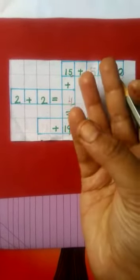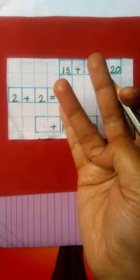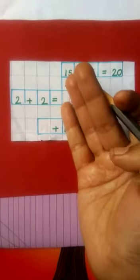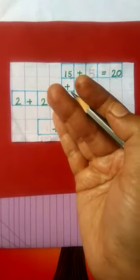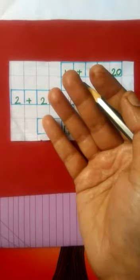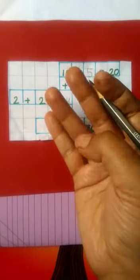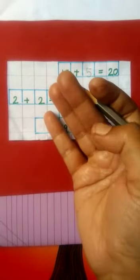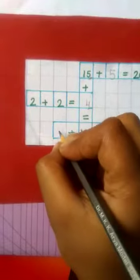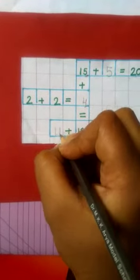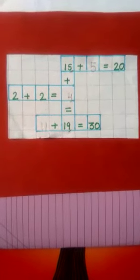19, then 20, 21, 22, 23, 24, 25, 26, 27, 28, 29 and then 30. How many are they? 1, 2, 3, 4, 5, 6, 7, 8, 9, 10, 11. So, we will write 11 here. Okay, now do practice of it.